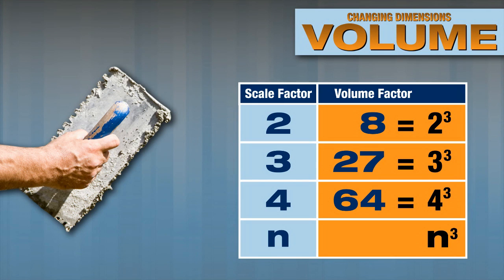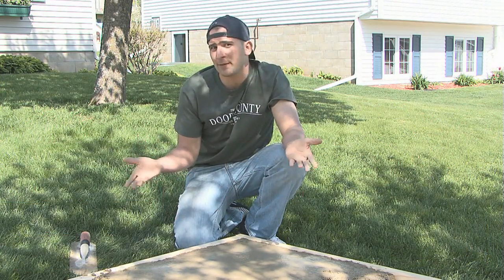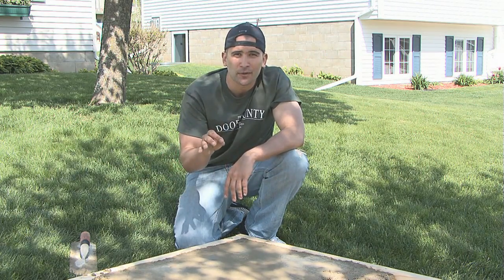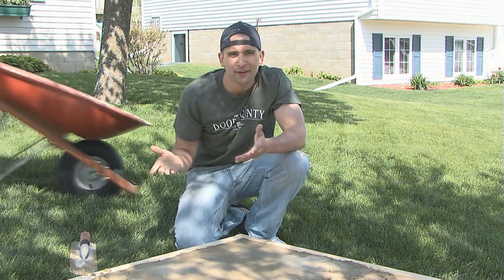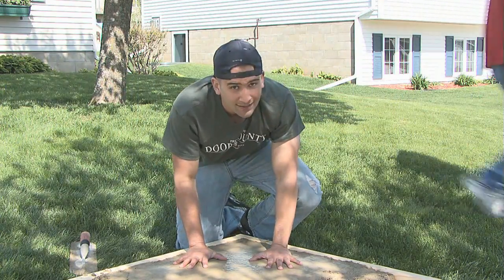There's the pattern. As each of the 3 linear dimensions of a rectangular prism — length, width, and height — is multiplied by the same number, the volume is multiplied by the cube of that number. When changing the dimensions of a patio or any prism, it's important to remember the effect on the volume. If you keep that in mind, you'll never get stuck on volume.